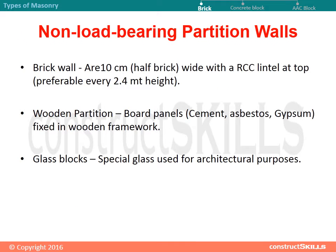Non-load bearing partition walls: Brick walls are 10 cm wide, half brick, with RCC lintel at top, preferable every 2.4 meter height. Wooden partitions use board panels of cement, asbestos, or gypsum fixed in a wooden framework. Glass blocks using special glass can also be used for architectural purposes.